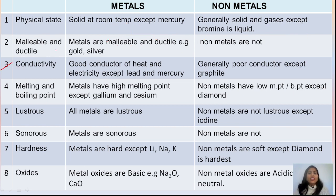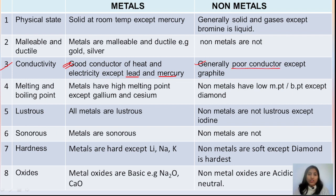Now, conductivity — whether current or heat can pass through them. Metals generally conduct both heat and electricity very easily. You have seen copper wires and how iron conducts heat. Metals are good conductors, but there are exceptions: lead and mercury do not show good conductivity. Non-metals are poor conductors, but the exception is graphite, which is a good conductor of electricity because it has free electrons. You can watch my allotropes video for more details on graphite's structure.